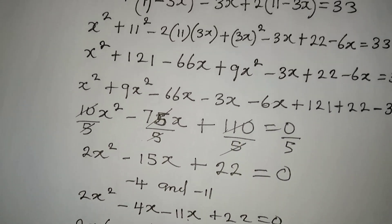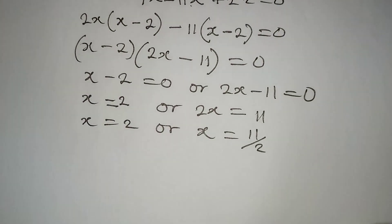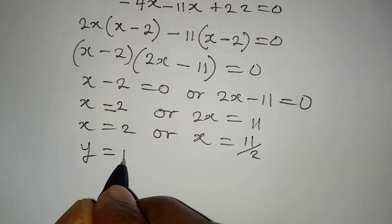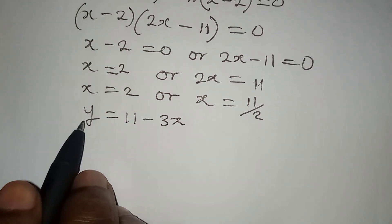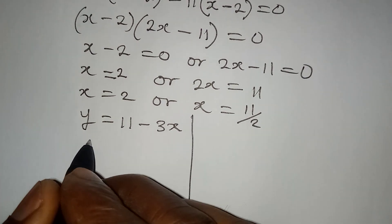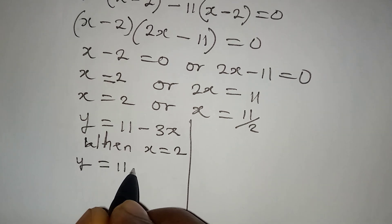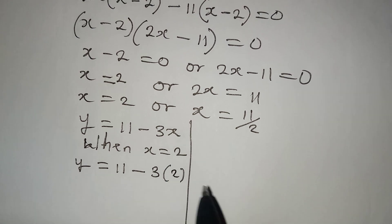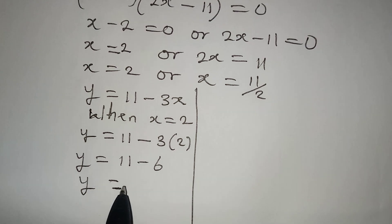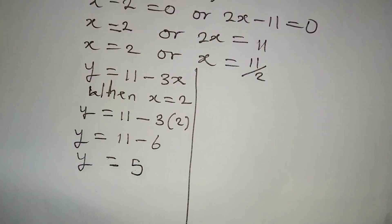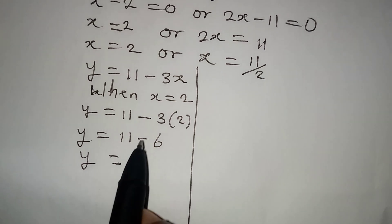Remember equation 3: y equals 11 minus 3x. We go back to this to get the values of y. When x equals 2, y will be equal to 11 minus 3 times 2, so y equals 11 minus 6, which gives us y equals 5.